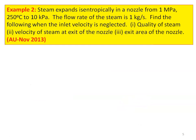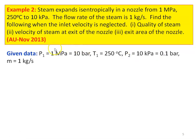Example number 2 from the November 2013 question paper. Steam expands isentropically in a nozzle from 1 megapascal, 250 degree Celsius, to 10 kilo Pascal. The flow rate of the steam is 1 kilogram per second. Find the following when the inlet velocity is neglected: one, quality of the steam; two, velocity of the steam at the exit of the nozzle; and three, exit area of the nozzle. Given data: P1 equal to 1 megapascal equal to 10 bar, T1 equal to 250 degree Celsius, P2 equal to 10 kilo Pascal equal to 0.1 bar, and mass flow rate equal to 1 kilogram per second.